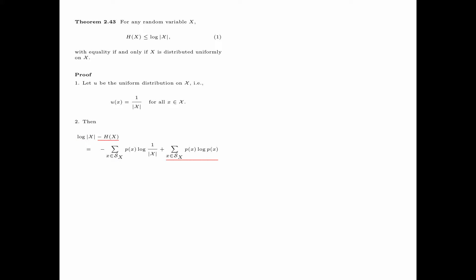We also write minus entropy of x as summation over x in the support of x, p(x) times log p(x). Now, 1 over the size of the alphabet is equal to u(x). By combining minus log u(x) and log p(x), we obtain log p(x) over u(x). This is recognized as the divergence between p and u, which by the divergence inequality is always greater than or equal to 0. This proves the inequality. This upper bound on the entropy of x is tight if and only if p equals u, that is, x is uniformly distributed on the alphabet.